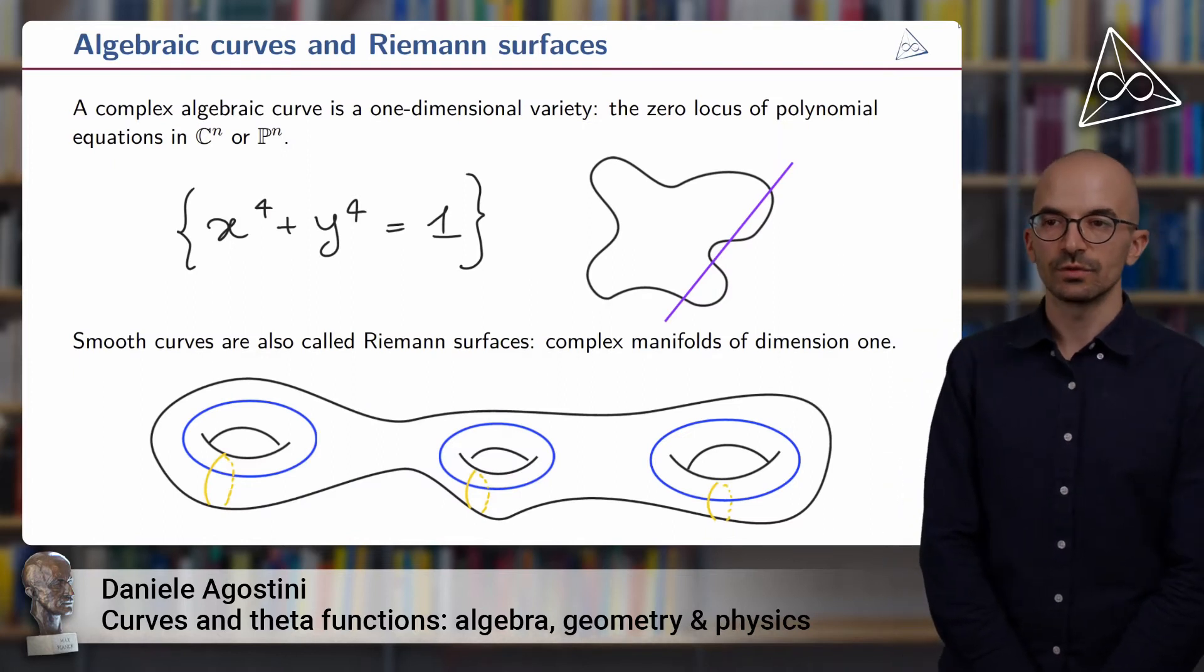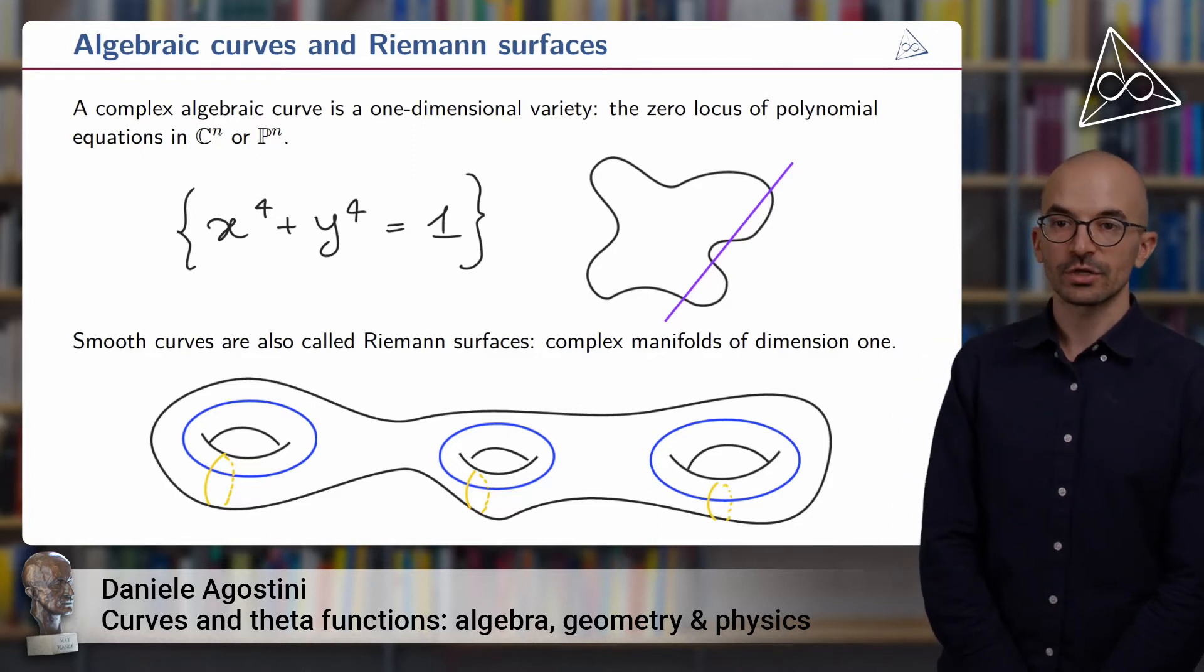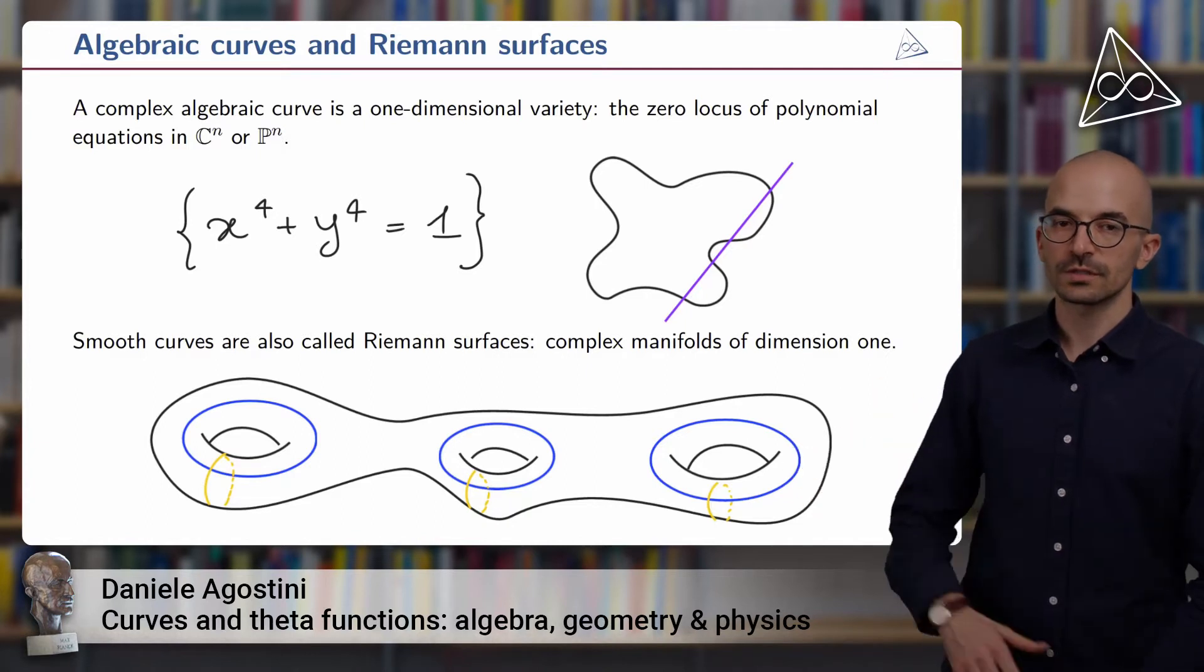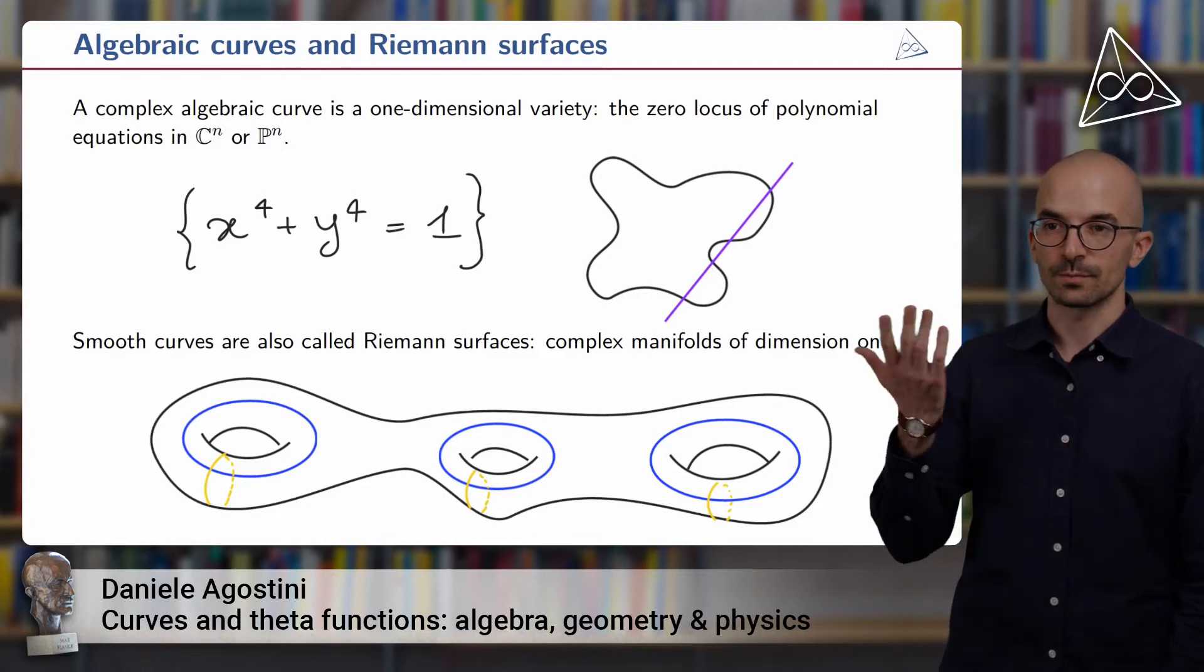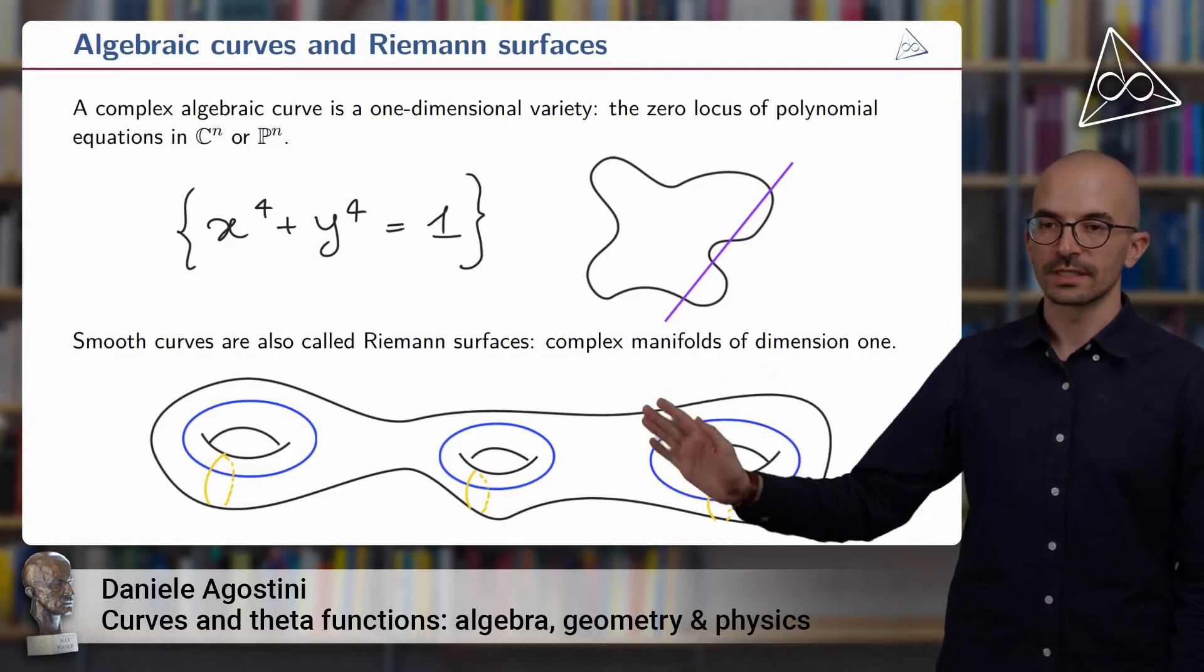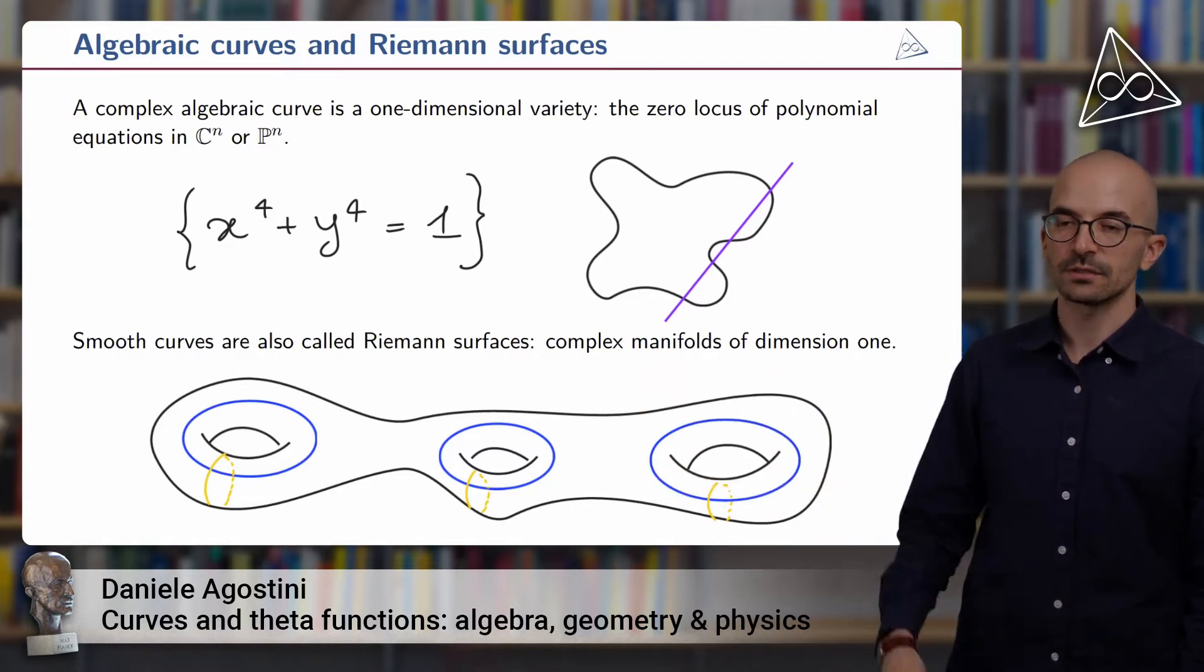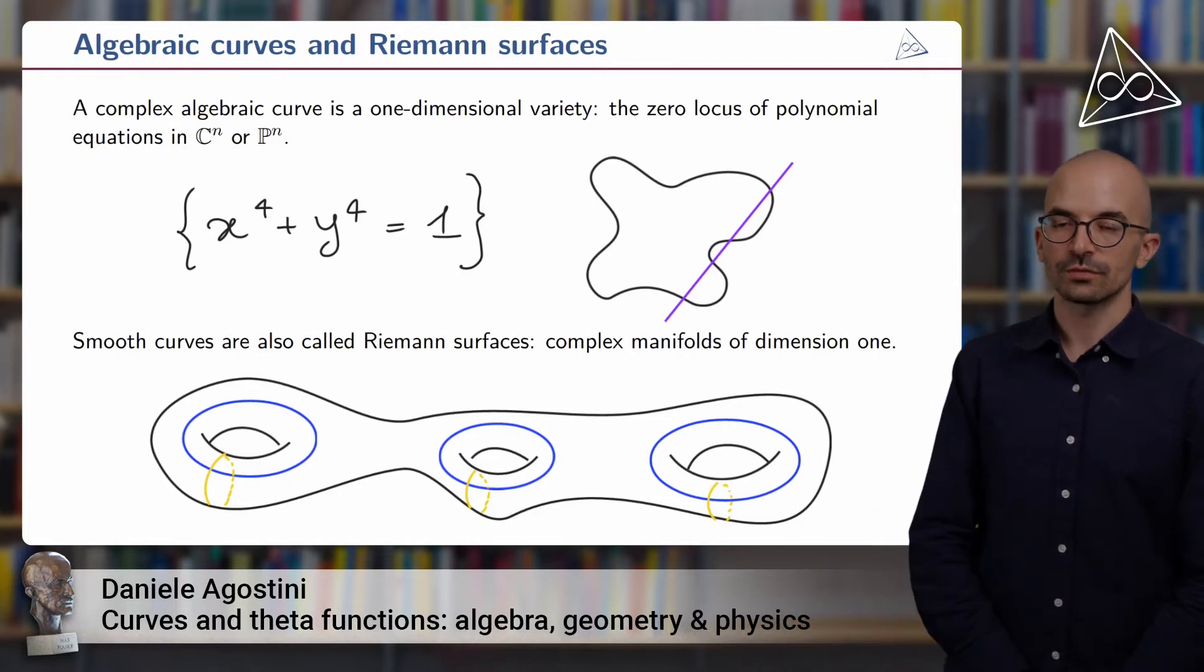The protagonists of today are algebraic curves. What are they? They are one-dimensional varieties, the zero loci of polynomial equations inside the affine space C^n or inside the projective space P^n. One example is given by this illustration. On one side, you see the algebraic aspect, which is, in this case, a quartic equation in two variables.